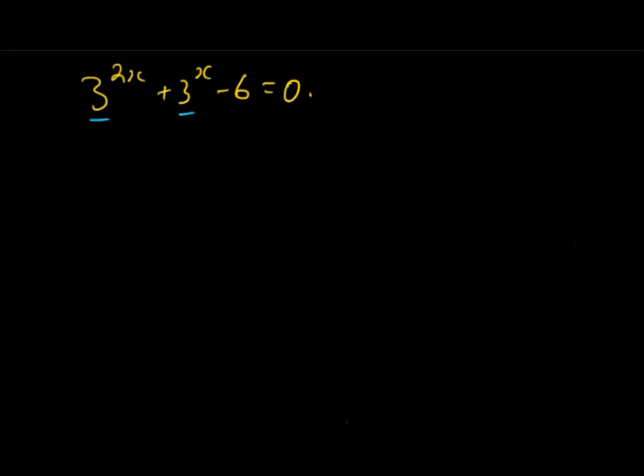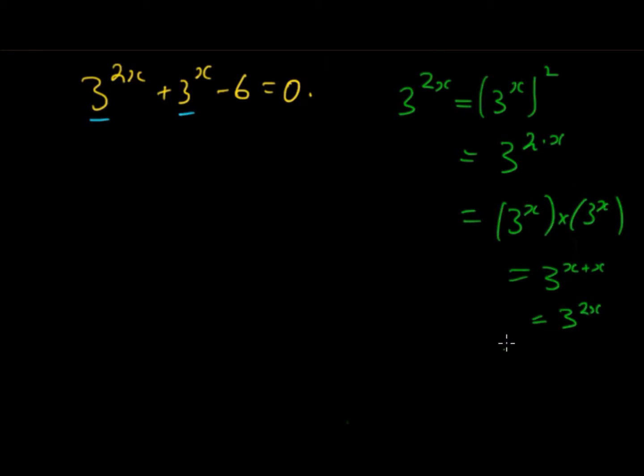So what you have to do is first realize that 3^(2x) is equal to (3^x)^2, and that's because using index laws that is equal to 3^(2·x). The other way to think about this is 3^x times 3^x equals 3^(x+x) which equals 3^(2x). So either way you can see how it's (3^x)^2 using both different methods.